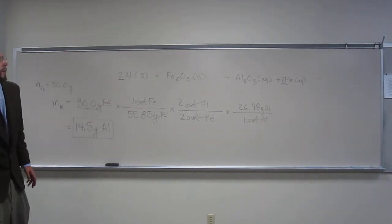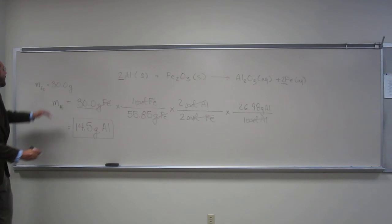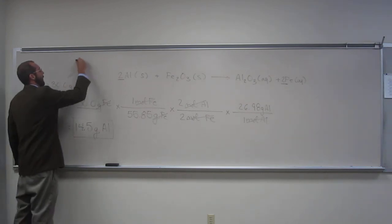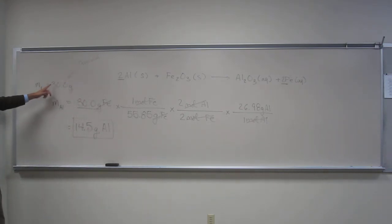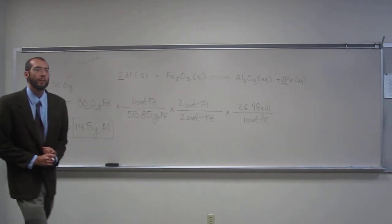So, if the theoretical yield of iron is thirty grams, then you must have started with this many grams of aluminum. That's what it said. Does that make sense to everybody?